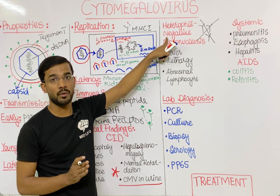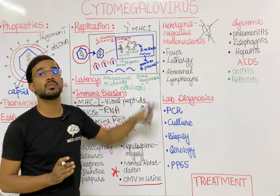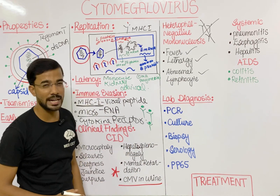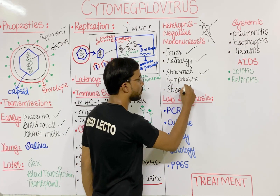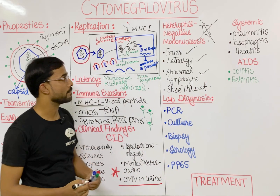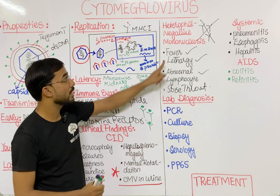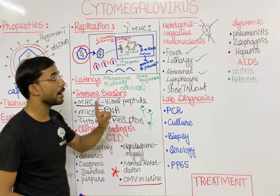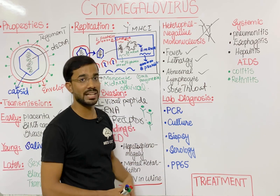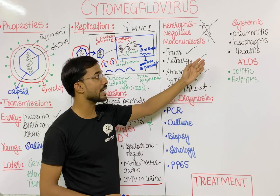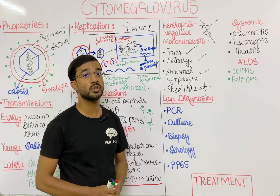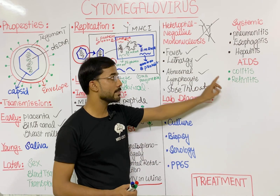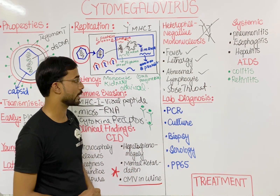In CMV infection, the symptoms are similar to mononucleosis: you will see fever, lethargy, abnormal lymphocytes, sore throat, or lymphadenopathy. This is mostly seen in immunocompetent patients. However, in immunocompromised patients you will see systemic infections like pneumonitis, pneumonia, esophagitis, and hepatitis. In AIDS patients, the two most important findings are colitis with diarrhea, and retinitis.